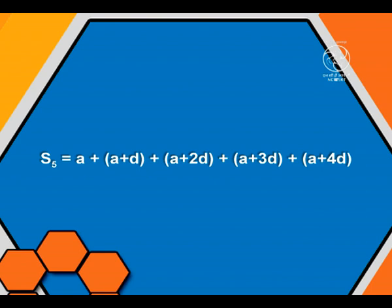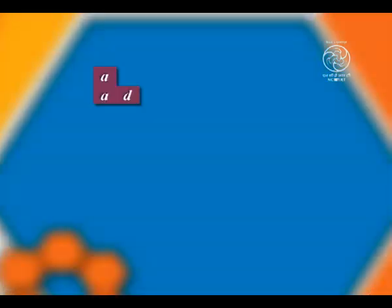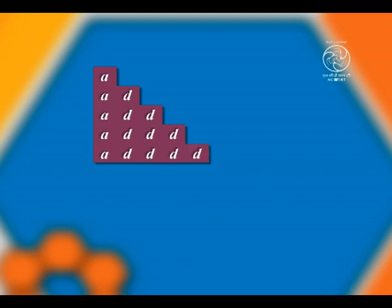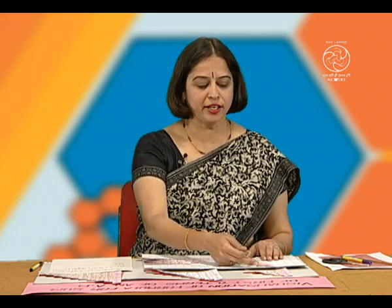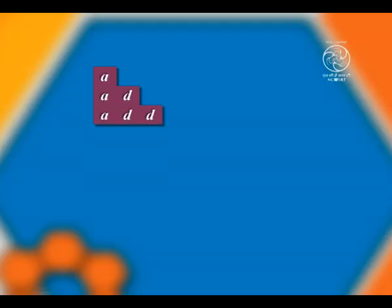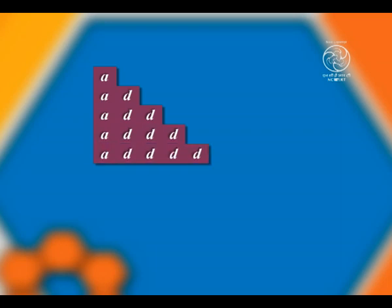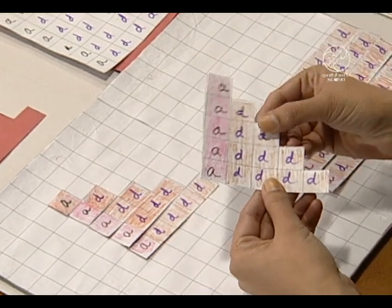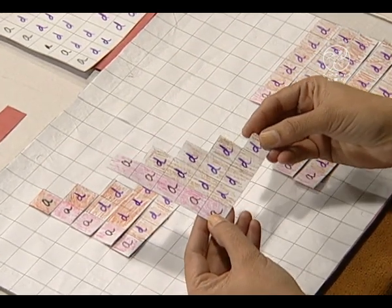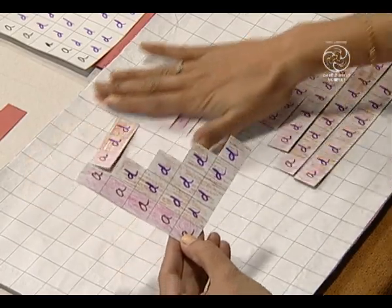Let us take these pieces and make a representation. This is A, A plus D, A plus 2D, A plus 3D, and A plus 4D. So you can see that we have put here A, A plus D, A plus 2D, A plus 3D, and A plus 4D. I have with me this piece representing the sum of first 5 terms of the given AP.